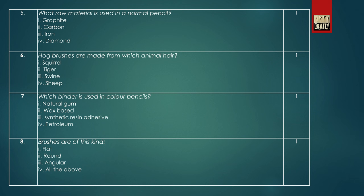Question 6: hawk brushes are made from which animal hair? Answer: swine. Question 7: which binder is used in color pencils? The answer is wax. Question 8: brushes are of this kind. The answer is: all the above.